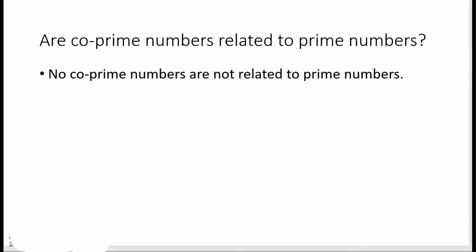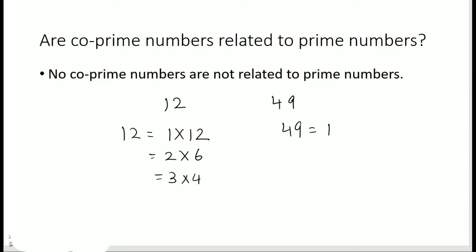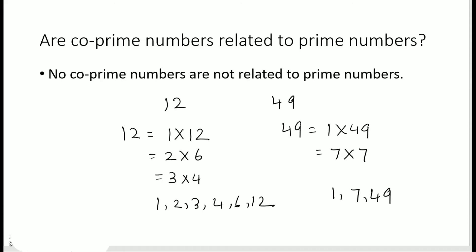Let's take the example of 12 and 49. So 12 is not a prime number, and 49 is also not a prime number — these are composite numbers. The factors of 12 are 1, 2, 3, 4, 6, and 12. The factors of 49 are 1, 7, and 49.